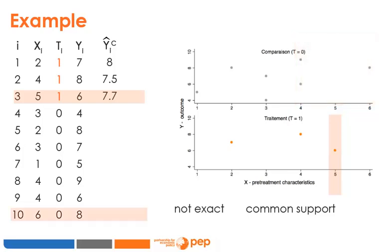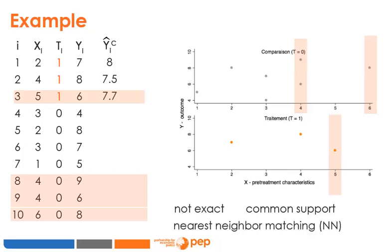My estimate of the counterfactual for individual 3 will be the average of outcomes among those with the most similar X's in the comparison group. This matching estimator approach is called nearest neighbour matching. The way of weighting or grouping individuals to construct a counterfactual gives rise to different matching estimators. Another question arises: can I use the same observation multiple times to estimate several counterfactuals? We have already used individuals 8 and 9 to construct the counterfactual of individual 2, and I would like to use them again for individual 3. The question is: should we implement matching with or without replacement?